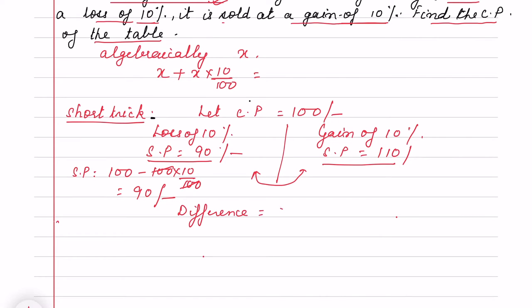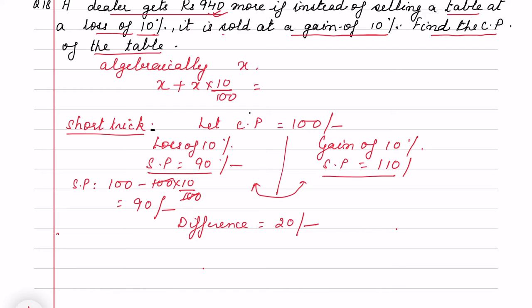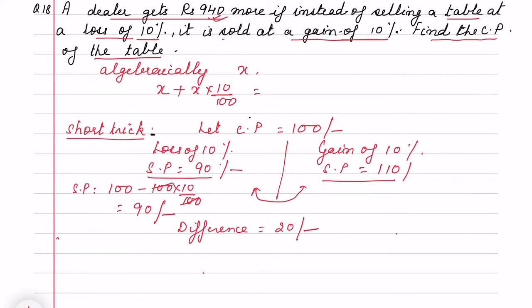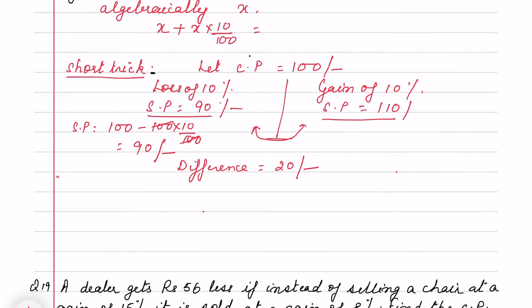So in one case I am getting selling price 90 rupees, another case 110 rupees. What is the difference between these two? The difference is 20 rupees. But in this case, the dealer when he sells a table gets 940 rupees more.